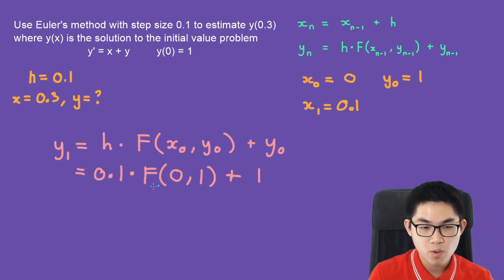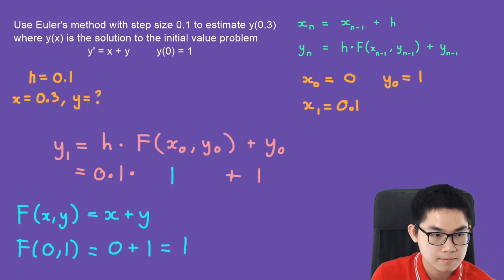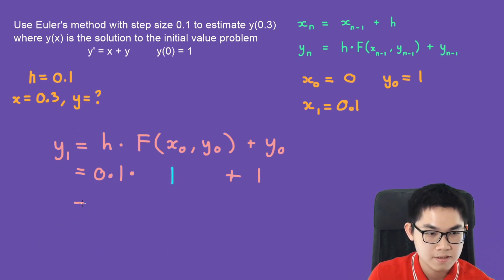Now, we have to find what is f at 0 and 1. Well, basically, f(x,y) right now is just this equation. So we just replace the y prime with f(x,y). And that's x plus y. So f at 0 and 1 is basically 0 plus 1, which is 1. 0.1 times 1 is 0.1 and plus 1 is 1.1. So here we record it down, y1 is equal to 1.1.